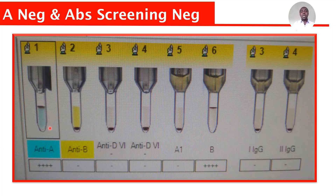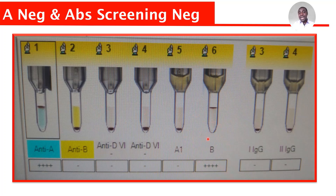Let's look at the interpretation properly. Remember that antiserum is embedded in the card. What we do here is card grouping and card antibody screening. In the card grouping, you can see anti-A, antiserum A, antiserum B, and antiserum D — that is what is embedded in columns 1 to 4. When you come to the A1 and B1 wells, there is nothing embedded; it's just a gel. The analyzer will take the patient cell and put it in the cell well, A cell in the A cell well, and then add the patient plasma.